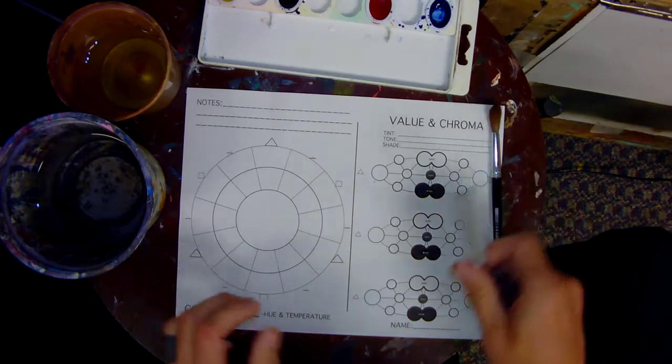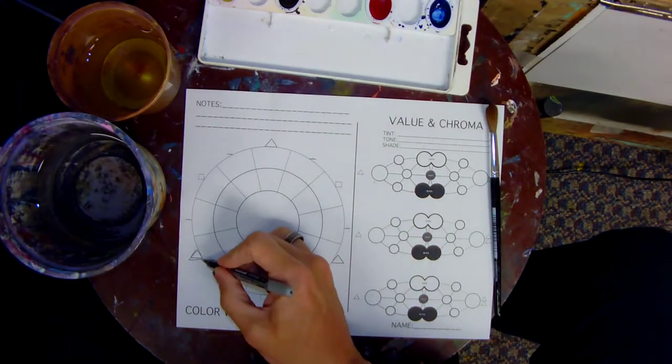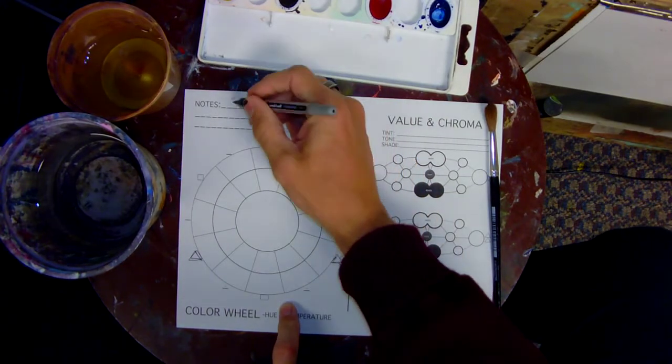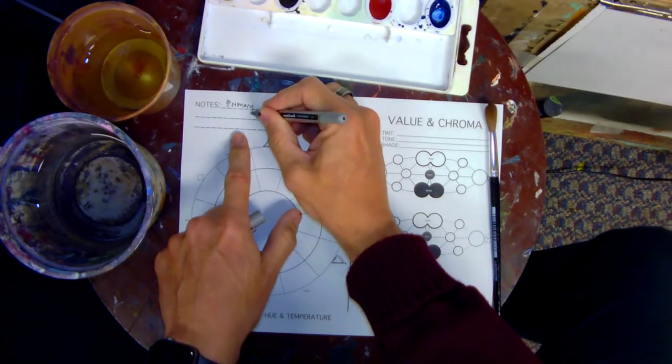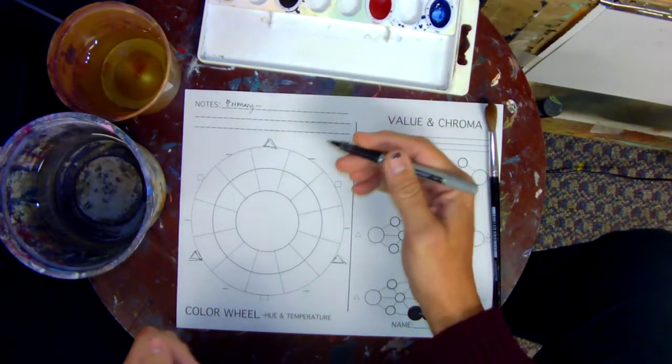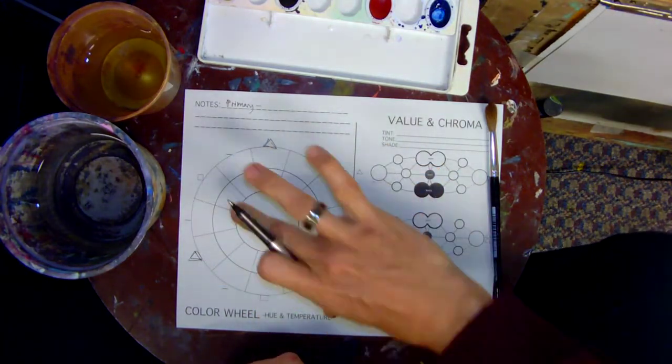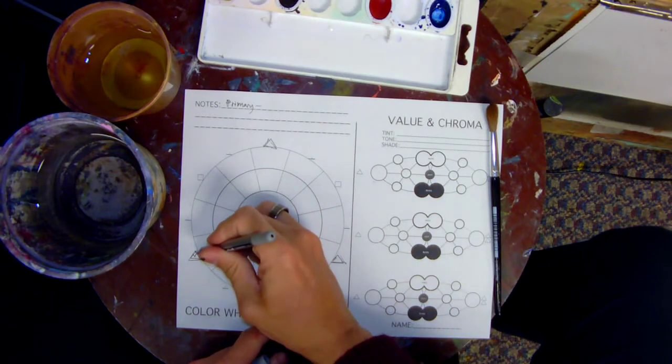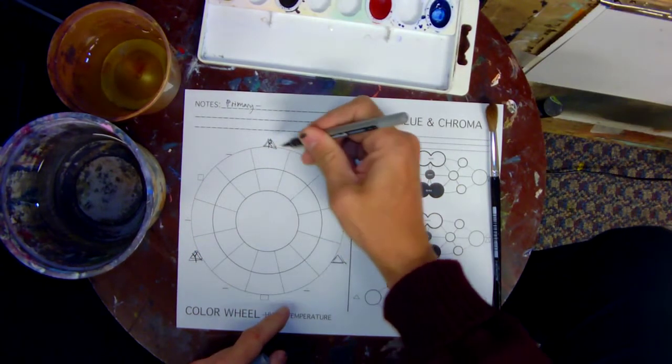A couple things to point out first is that there are three triangles right here. This is what we're going to begin with, and we start with these because these are called your primary colors. They're primary because you need them first, you can't make them with anything else. It doesn't really matter what order you put them in because you can always rotate the wheel. But they are yellow, red, and blue.